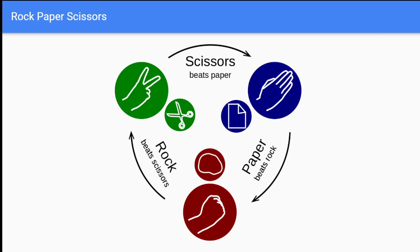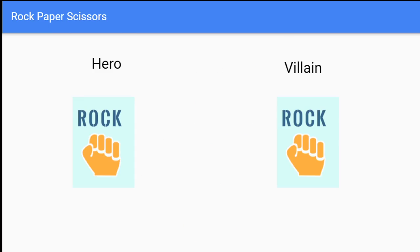To describe counterfactual regret minimization, we'll start by mastering the simple game of rock paper scissors. In this game, two players each select rock, paper, or scissors, with the winning player receiving one point for a win, negative one for a loss, and zero for a tie. Let's go over an example: we play rock and our opponent plays rock as well, so we both receive a reward of zero.